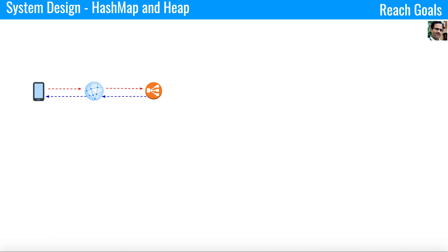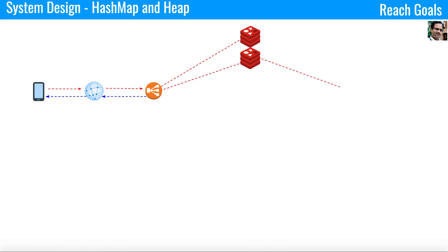Now let's see how to optimize further with the help of HashMap and heap. Instead of keeping the count in the database, let's go to the Redis cluster. Redis is a key-value in-memory data store and performs much better than a database. When a user listens to music, create an event and insert the key as song ID and the value as count. Keep incrementing the count if the user listens to the same song. Then insert all the map entries from Redis into a max heap and get the song with the highest frequency. The time complexity is O and space complexity is O.